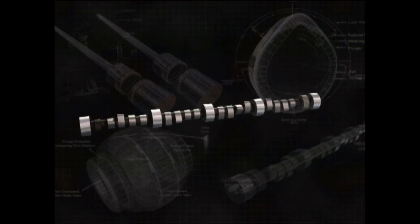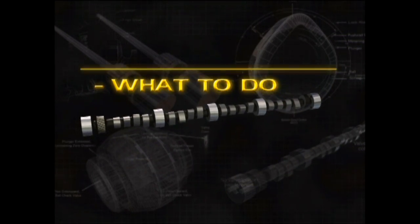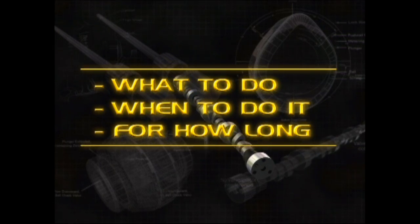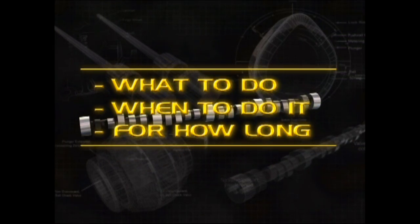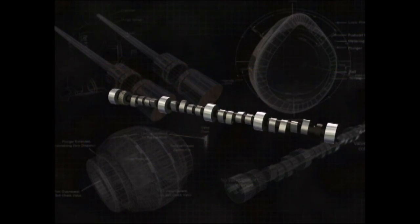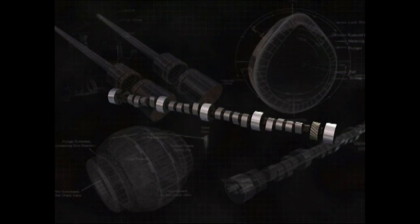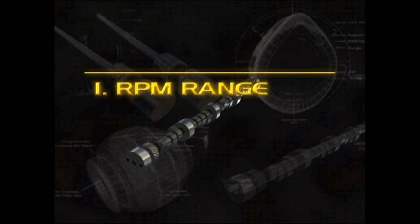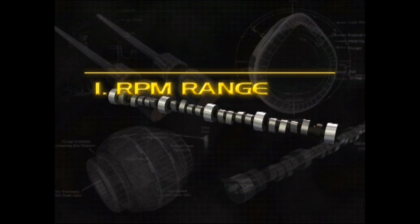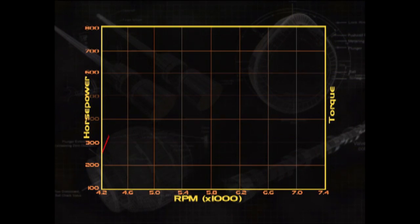The cam is the mechanical brain of an engine. In simplest terms, it tells the valves what to do, when to do it, and for how long. So picking a camshaft for your long block is arguably the most important decision you'll make. Ask yourself two questions: what RPM range will the engine spend most of its time in, and how much am I willing to trade for reliability and lack of maintenance? Next, consider the power curve you'd like the engine to produce.